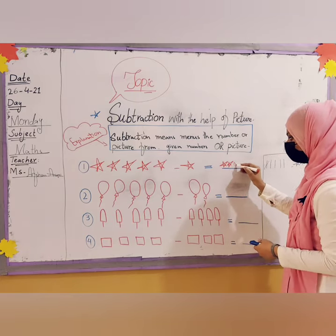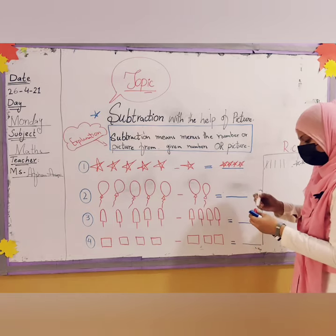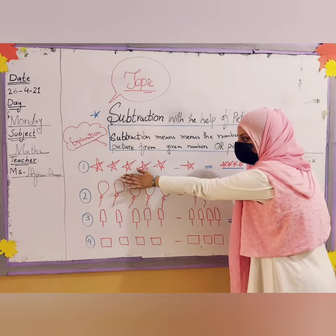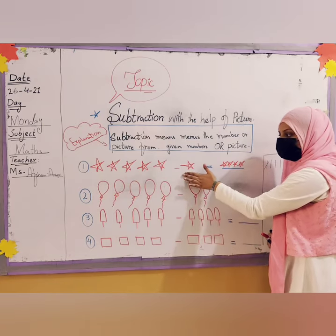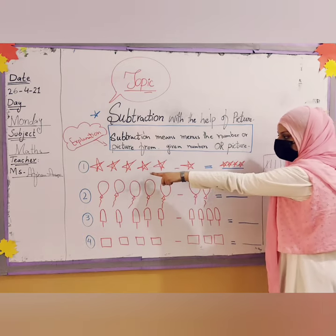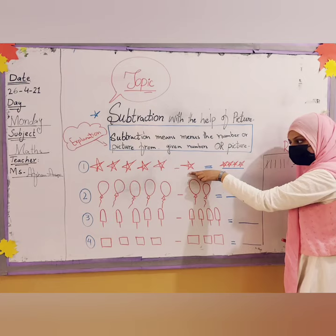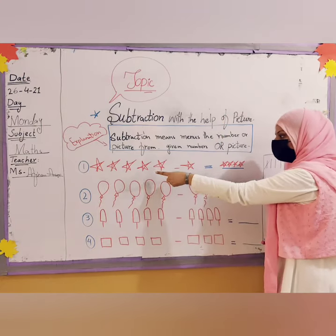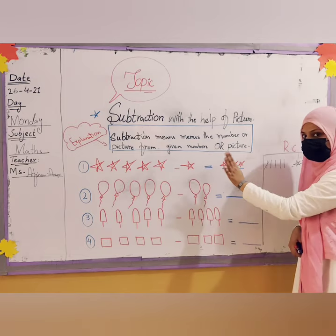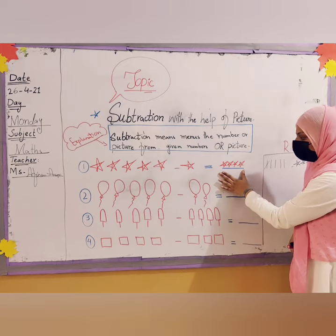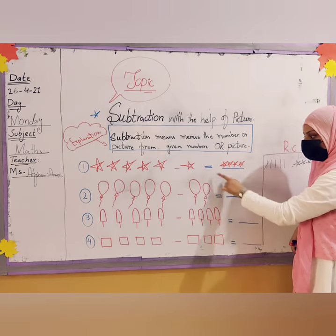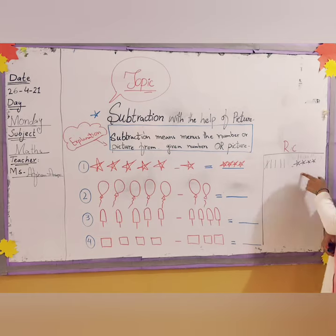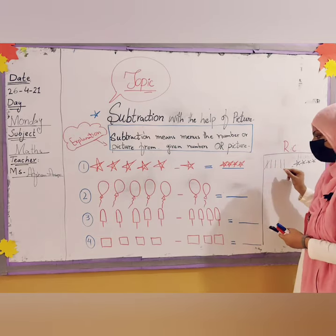So I draw four stars as the answer: one, two, three, four. You have to count the first value, check the second value to minus, then count what remains. Four stars were remaining, so you draw four stars in the answer space.